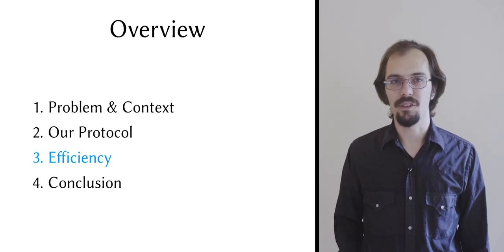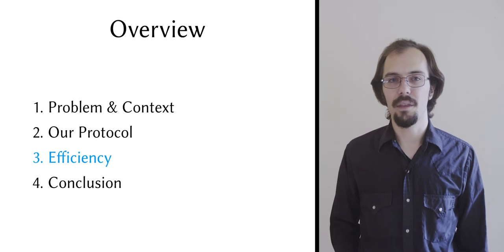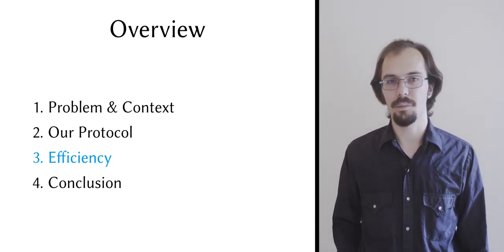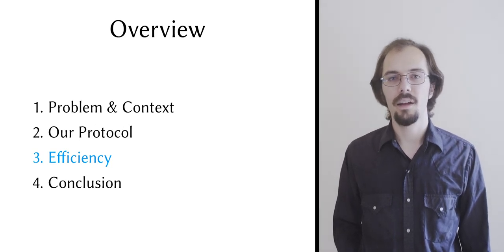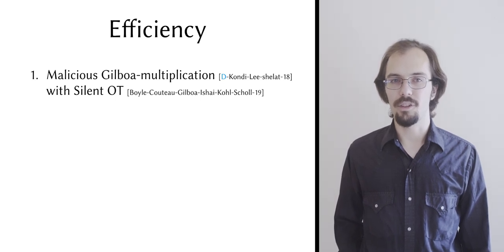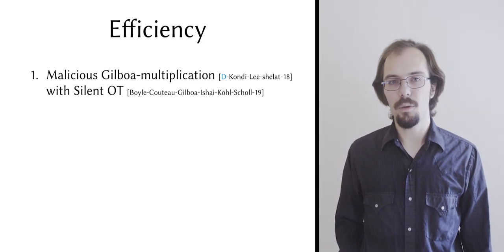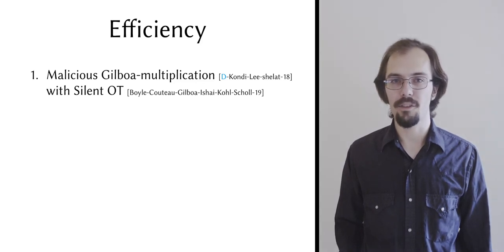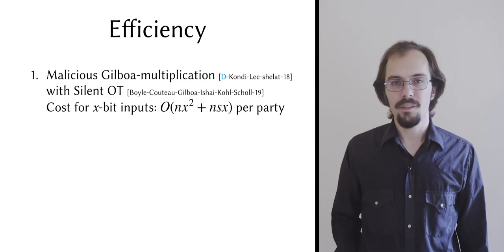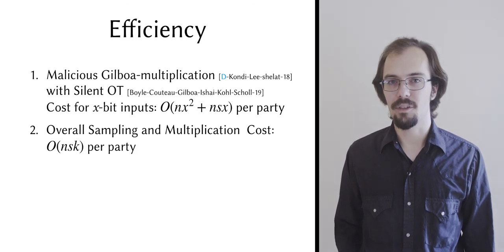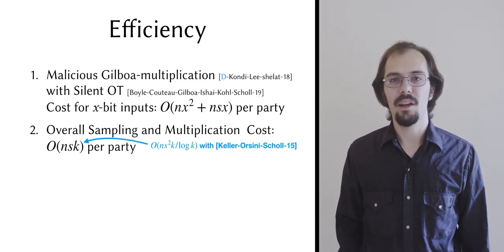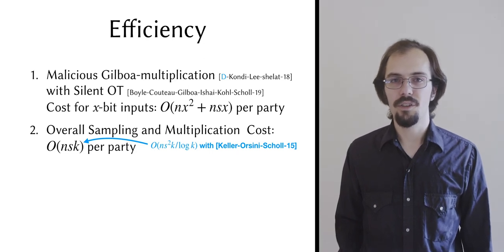Now before I close, I want to talk a little bit about efficiency. I've been qualifying my complexity statements throughout this talk by saying that they hold if multiplication has a quadratic cost. In the malicious setting, we instantiate our multiplication functionality using an OT-based construction, derived from multipliers introduced by recent works on secure ECDSA signing. As a basis, we used the silent OT extension scheme introduced last year by Boyle, Couteau, Gilboa, Ishai, Kolesnikov, and Scholl, which has almost no overhead when amortized. But the multiplier construction itself requires a special encoding scheme, which means that it has communication cost in O per party for n parties and x-bit inputs, where s is the statistical parameter. This leads to an overall communication complexity in O for sampling and modulus construction. As an aside, if we use the OT extension protocol of Keller, Orsini, and Scholl instead of silent OT extension, then this cost goes up by a factor of s over log k, which is concretely something like 4 to 8.